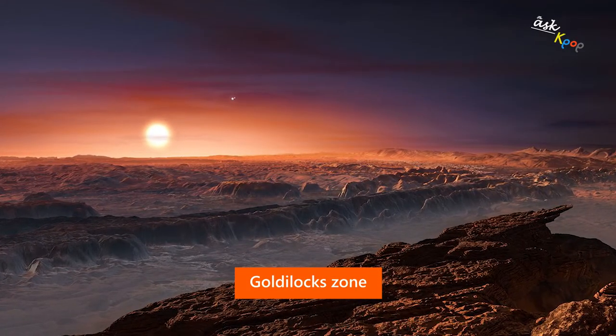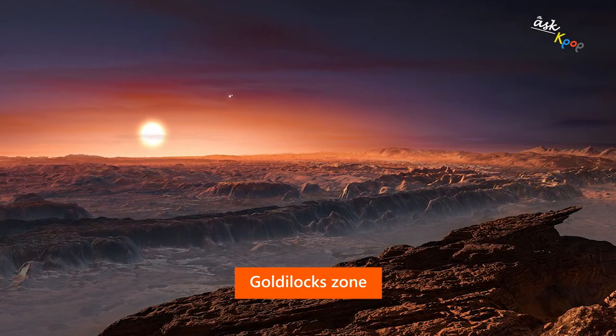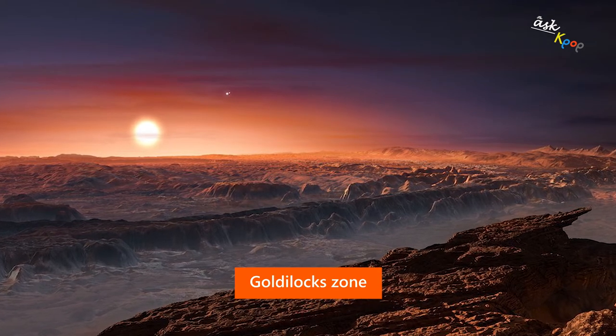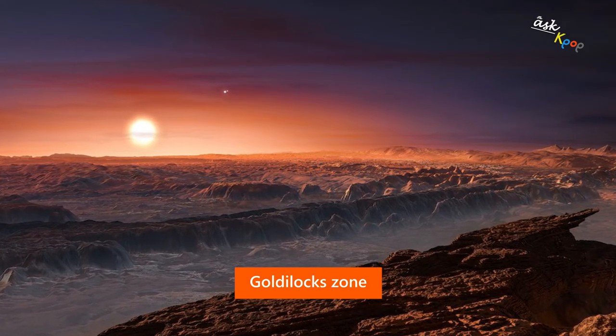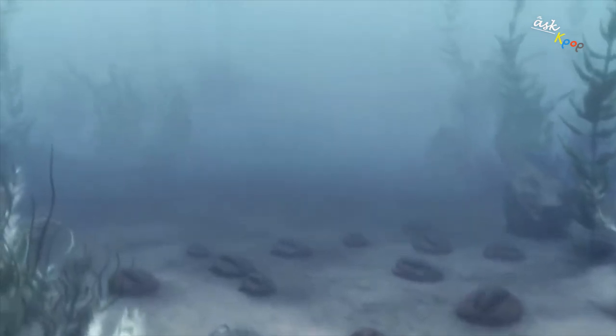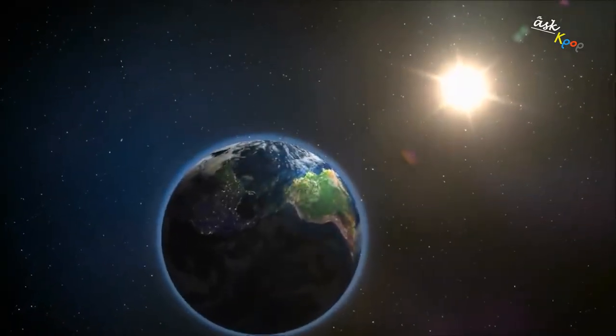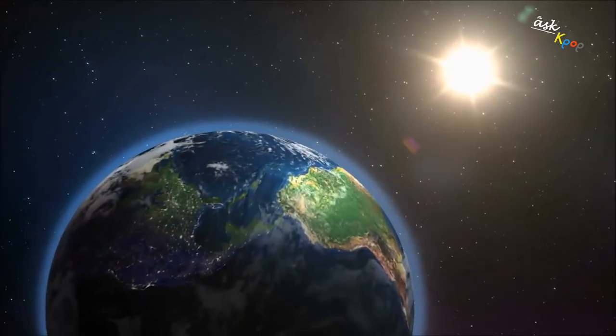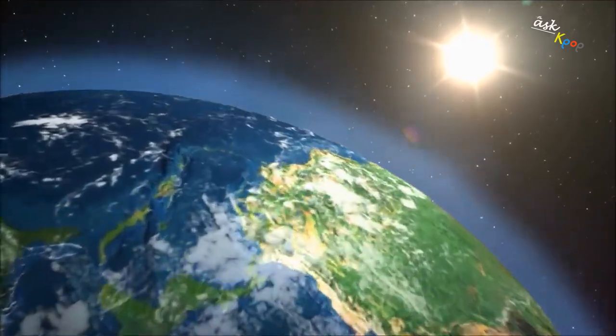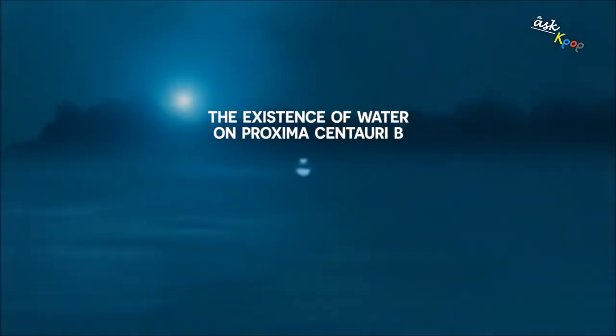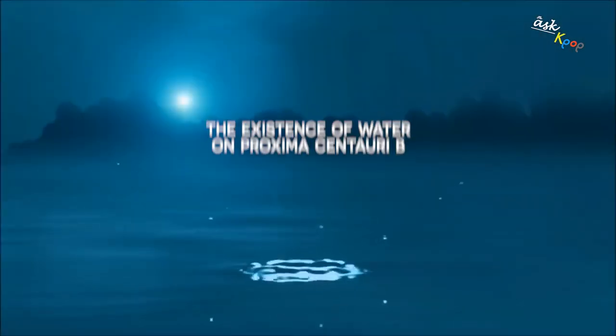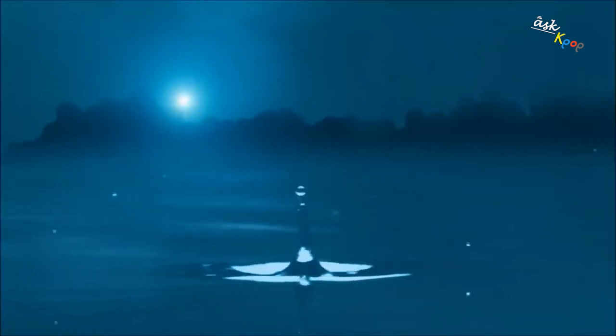Proxima b lies in a habitable zone, sometimes called the Goldilocks zone, which is close enough to the central star for water on the planet's surface to be liquid. The reason it is so called is that the conditions here are not too hot, not too cold, but just right, and especially there is liquid water, an extremely important ingredient for life.